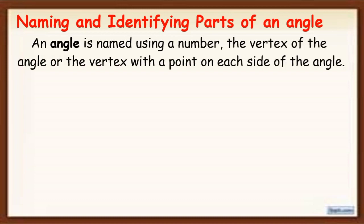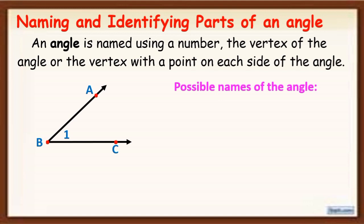Now let's proceed in naming and identifying parts of an angle. An angle is named using a number, the vertex of the angle, or the vertex with a point on each side of an angle. For example, we have this angle. The possible names of the angle can be angle one — an angle can be named using a number, so that is one of the possible names. You can call this angle as angle one.